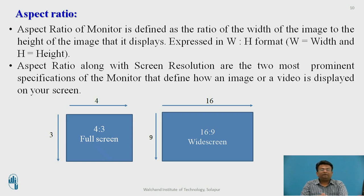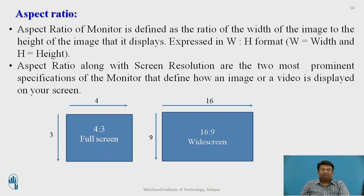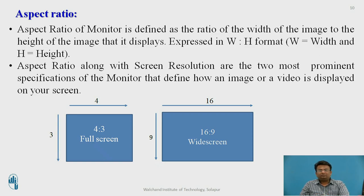Now let us see some important factors regarding DTV. The first factor is aspect ratio. The aspect ratio of a monitor is defined as the ratio of the width of the image to the height of the image it displays. Along with screen resolution, aspect ratio is one of two important factors of a monitor that defines how an image or video is displayed. The 4:3 aspect ratio is called full screen, whereas 16:9 is called widescreen.